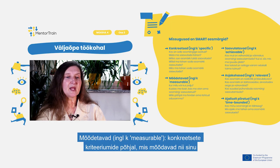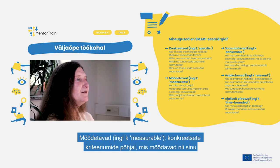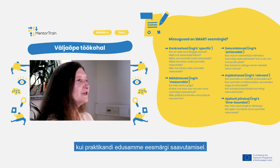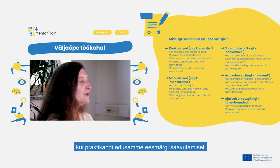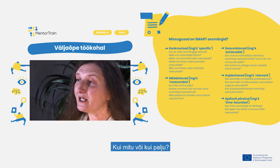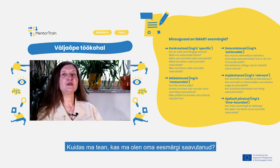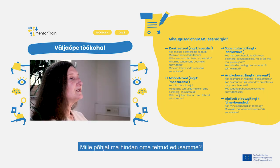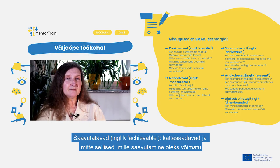Measurable: with specific criteria that measure your and your apprentice's progress toward the accomplishment of the goals. How many or how much? How do I know if I have reached a goal? What is my indicator of progress?